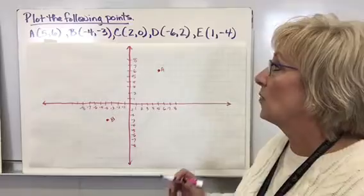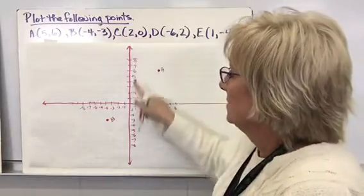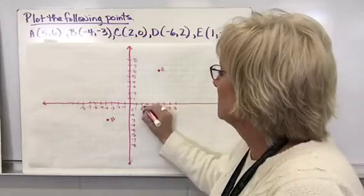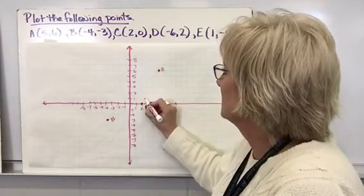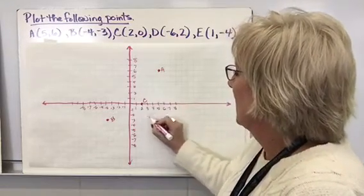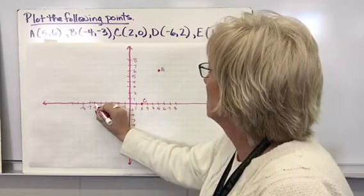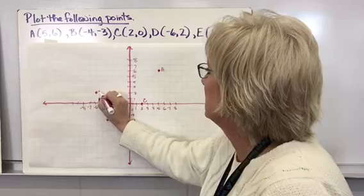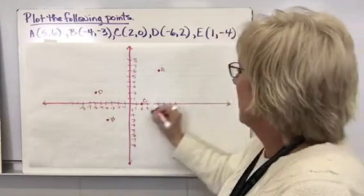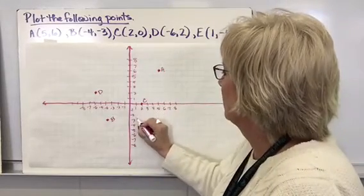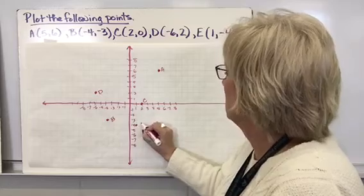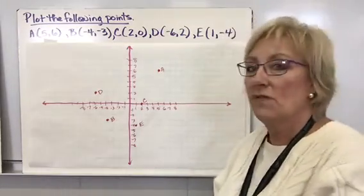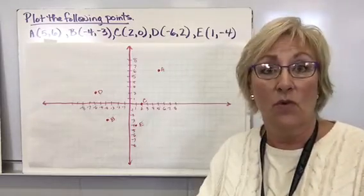Go ahead and pause the video. For C, I've got (2, 0) — the y doesn't go up or down so it sits right on the x-axis. D is at (-2, -6), and E is at (1, -4). Look at these and make sure you've got the correct points plotted in the correct locations.